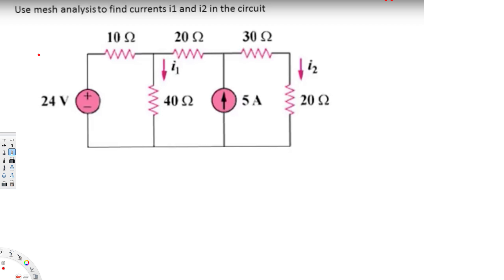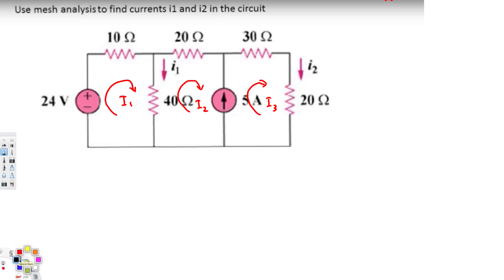In this video we are going to see a mesh analysis problem with a super mesh. The question is asking to find current i1 and i2. We are going to assign mesh one here, mesh two for this one, and mesh three for this one. It doesn't matter which direction you pick, but it's always better to keep the same direction. So this is i1, i2, and i3.